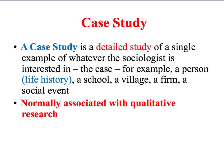Another type of research design is the case study — a very detailed study of a single example of whatever the sociologist is interested in studying. That could be a person, an institution such as a school, a place, or a social event. Ethnography, which we've already mentioned, is itself a case study of a particular social group. Because case studies are detailed, they are normally associated with qualitative research methods.